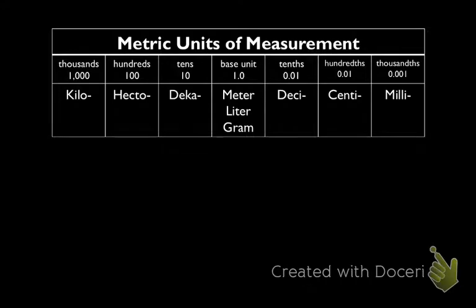So here's a table showing the metric units of measurement. We'll see that the base unit is equal to 1, and that's meters, liters, and grams. Like I said before, the metric system uses powers of 10. So every unit is about 10 times bigger or smaller than the unit before it.